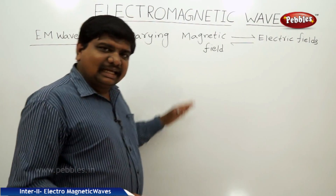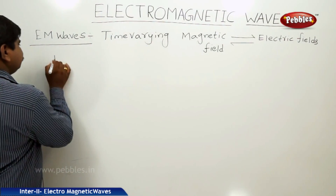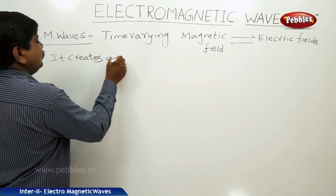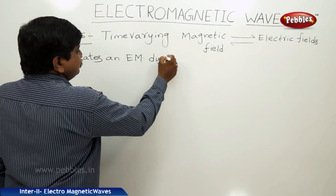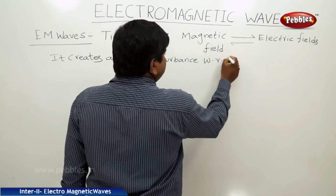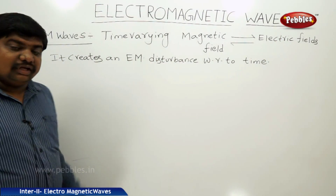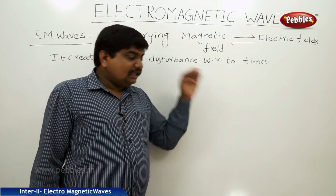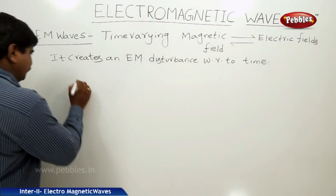This creates an electromagnetic disturbance with respect to variation in time. This disturbance is created and formed like a loop or a wave, with the electric and magnetic fields at right angles to each other.